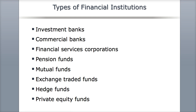Financial services corporations are very large companies that combine many different financial institutions under one corporate umbrella. Most started in one area but have diversified to cover many functions. For example, Citibank is a commercial bank, but it's also an investment bank, a securities broker, an insurance company, and a leasing company — so big that we just call it a financial services corporation.